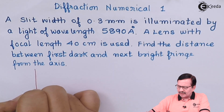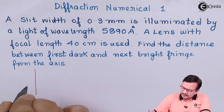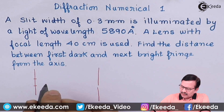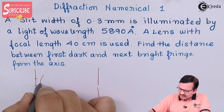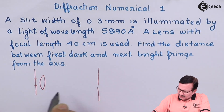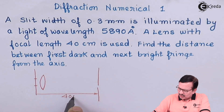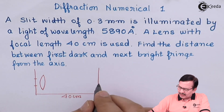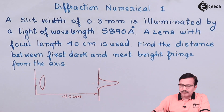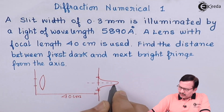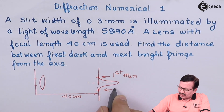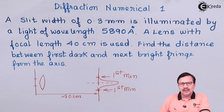So here we have the diffraction slit, and here we have the screen. He is saying that there is a focal length of 40 cm, so let us assume the lens is very close to the slit. This distance is approximately equal to 40 centimeters. You will have a diffraction pattern something like this, and this is where you are going to get the first minima.